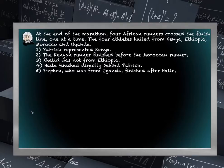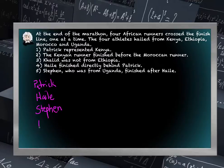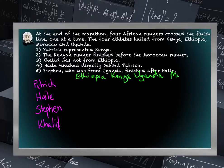The best first step for an ordering and pairing problem is usually to put together what I call a pairing table. That looks something like the following — just taking the information we know and laying it out in an XY table. The people are Patrick, Hele, Stephen, and Khalid. Likewise, we have the four countries we ultimately want to pair them to: Ethiopia, Kenya, Uganda, and Morocco.